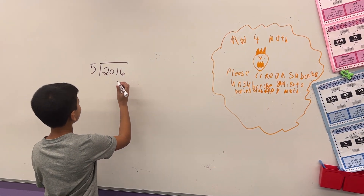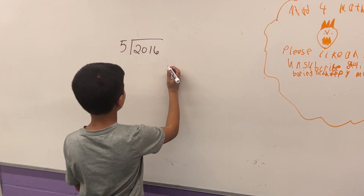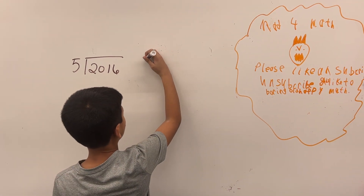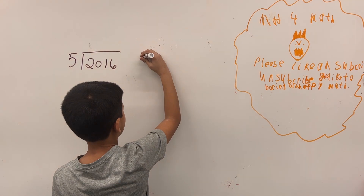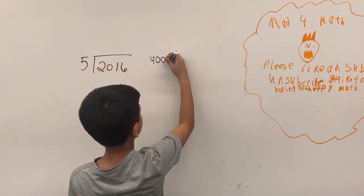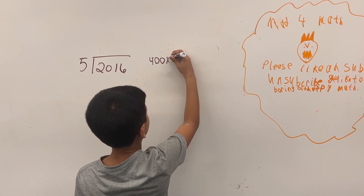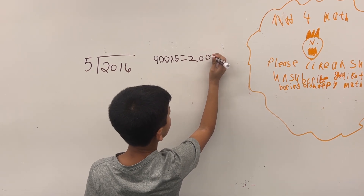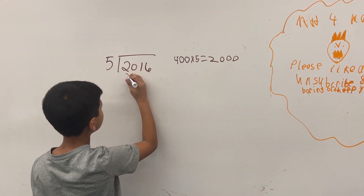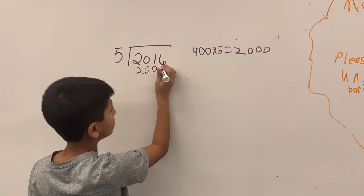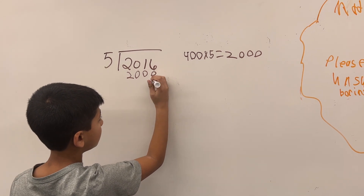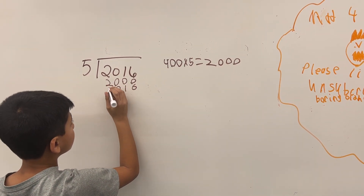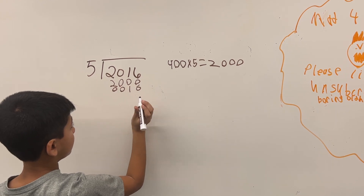So first, since we know that 5 times 400 is 2,000, we write that over here. Then we subtract 2,016 minus 2,000, and we get 16.